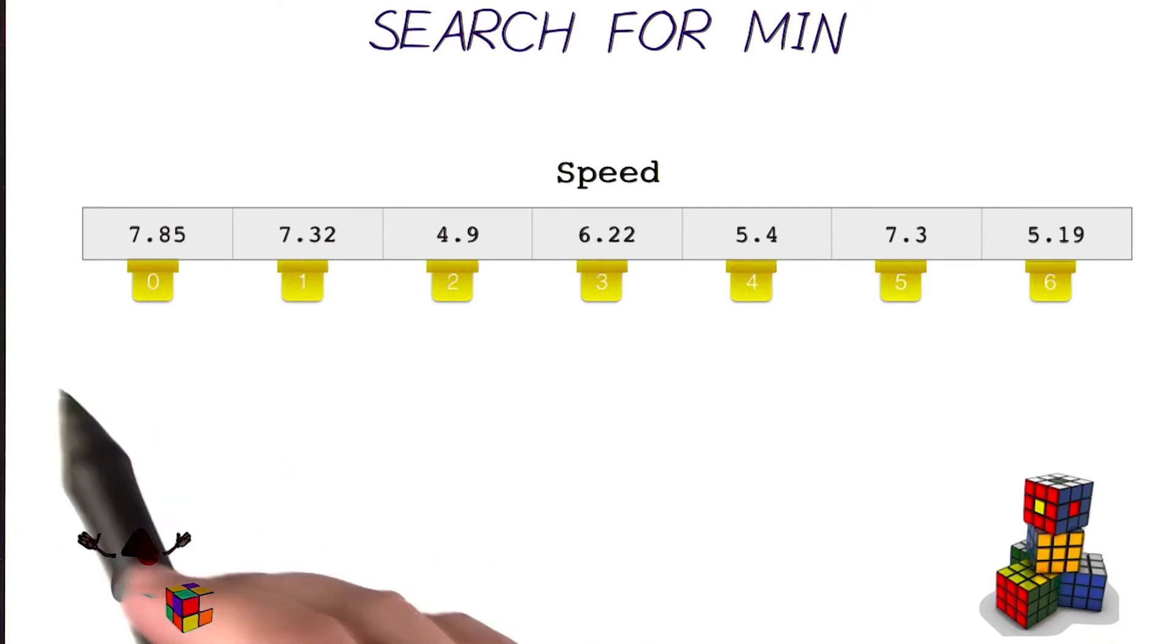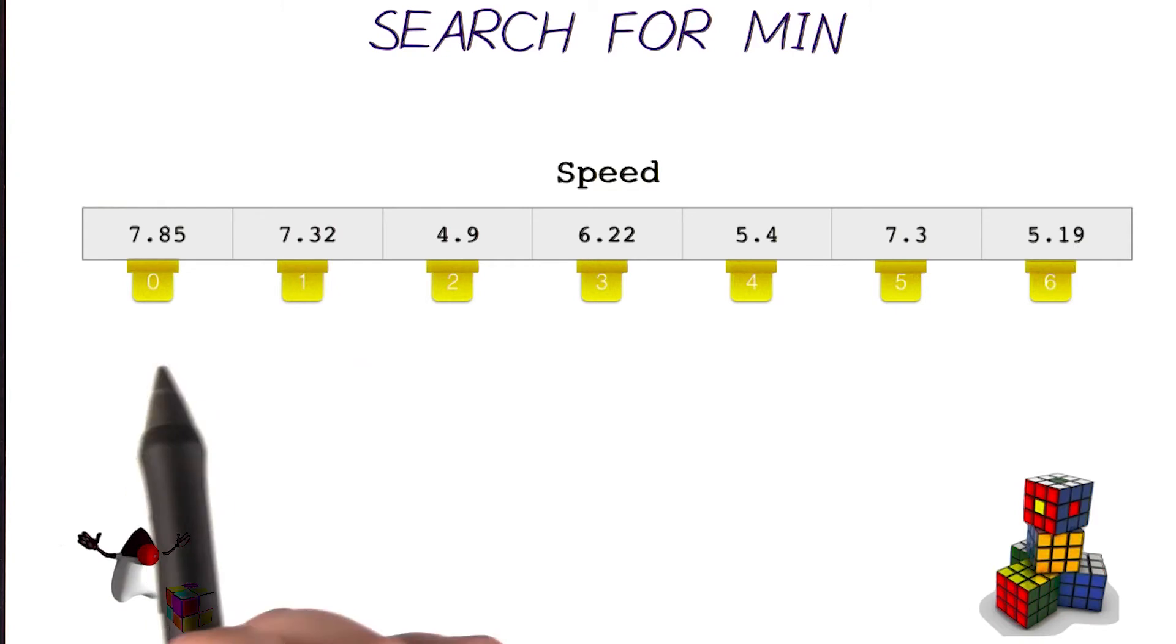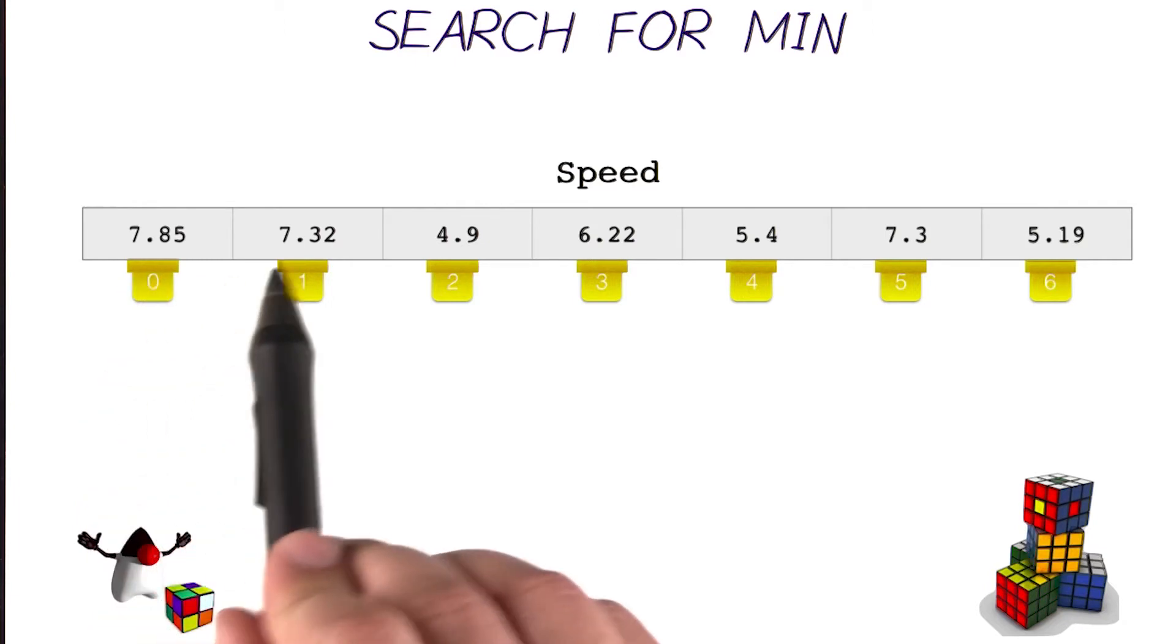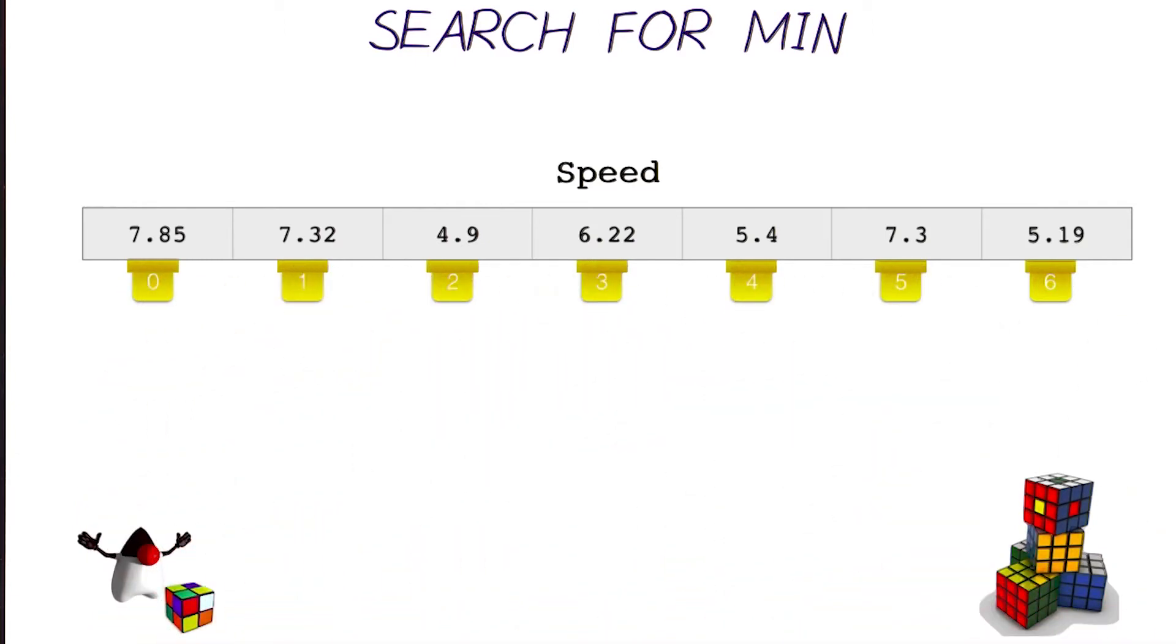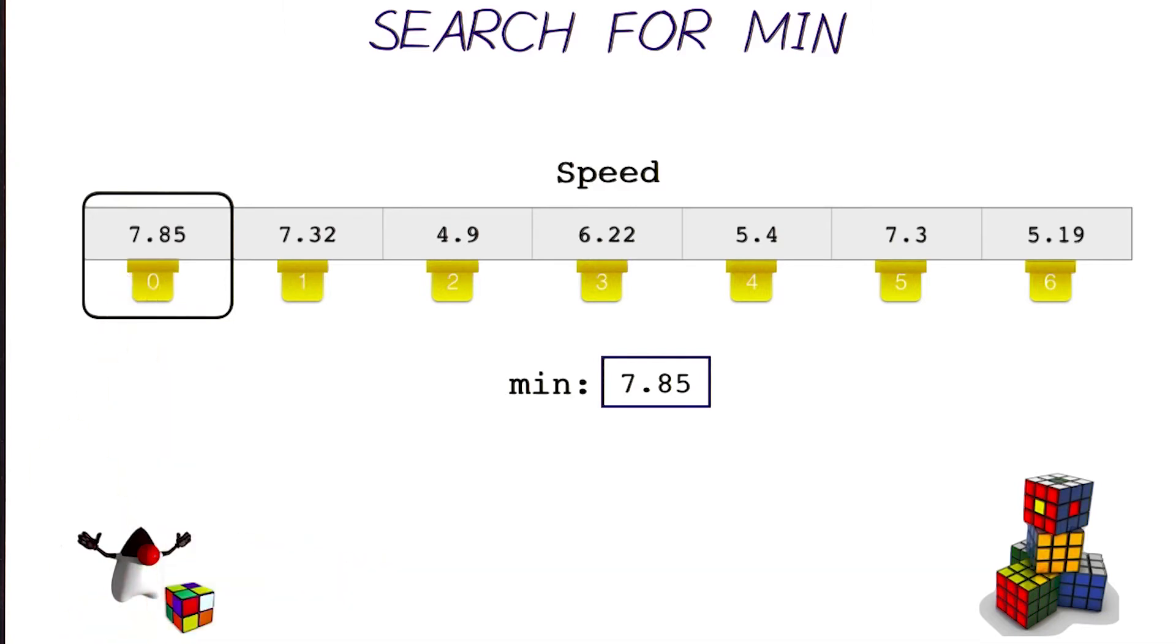Here I have this array of doubles called speed that has these numbers in it, indexed from 0 all the way to 6. To find the smallest number here, I just have to go through them one by one and only remember the smallest number I've seen so far. I'll store the smallest number I've seen so far in this variable called min for minimum. Let's start from the very beginning. The very first value is 7.85, and that's the smallest we've seen so far, so that goes into our minimum variable.